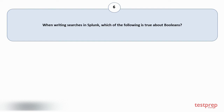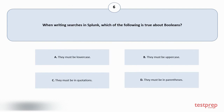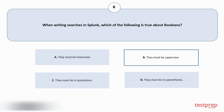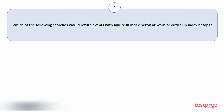Question number six: when writing searches in Splunk, which of the following is true about Booleans? Your options are: A) they must be lowercase, B) they must be uppercase, C) they must be in quotations, D) they must be in parentheses. The correct answer is option B.